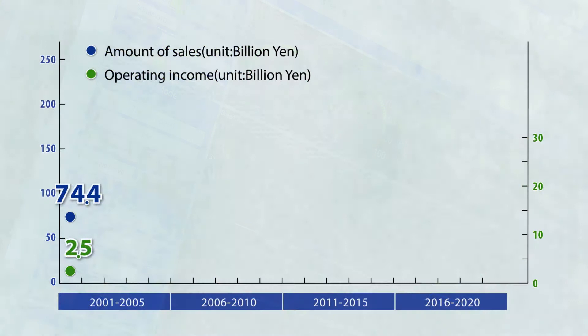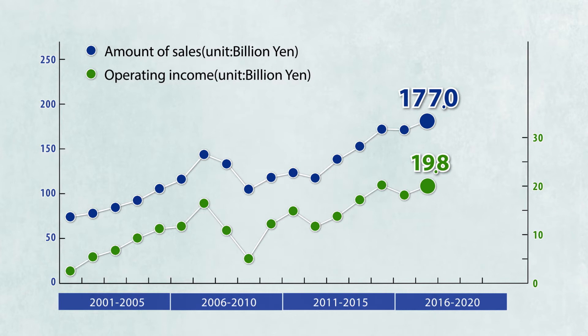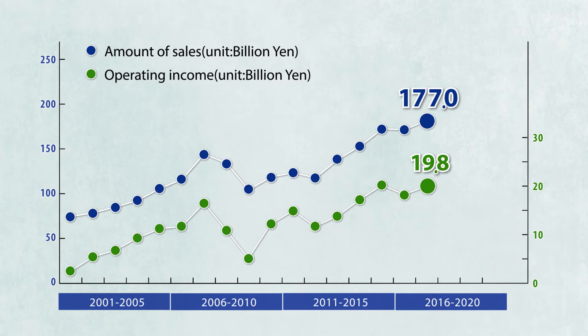By continuing to perform these priority policies, we expect each segment to show good growth. We've formulated a mid-term plan to aim for sales of 250 billion yen in 2020.